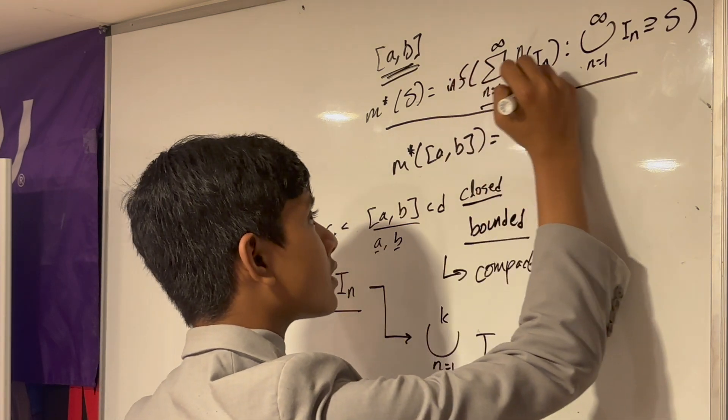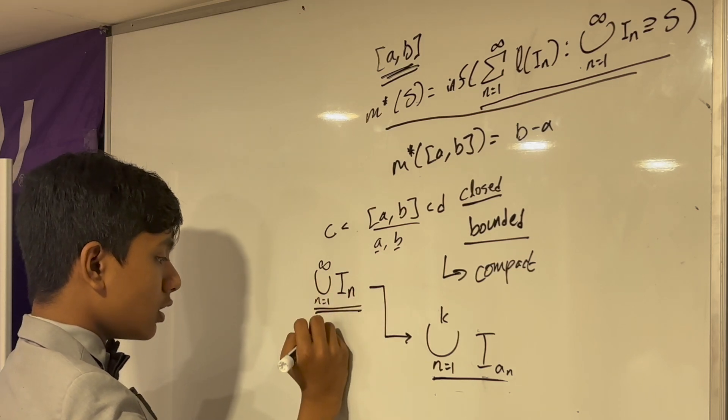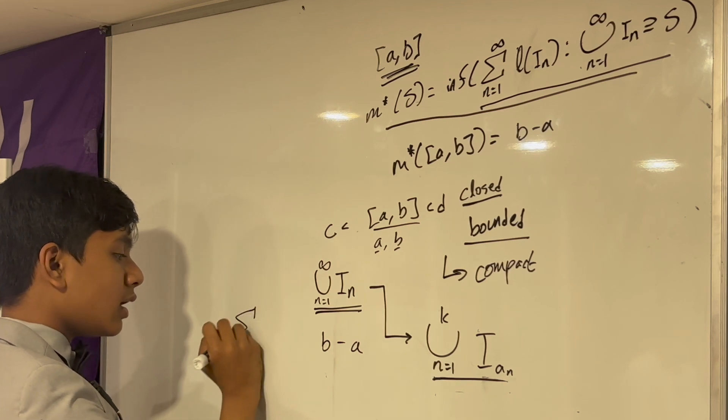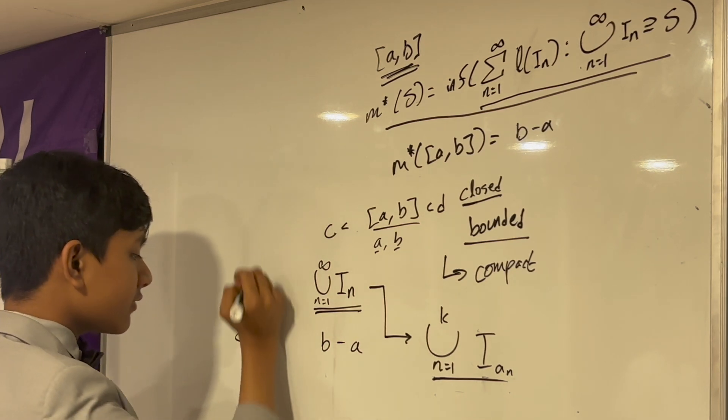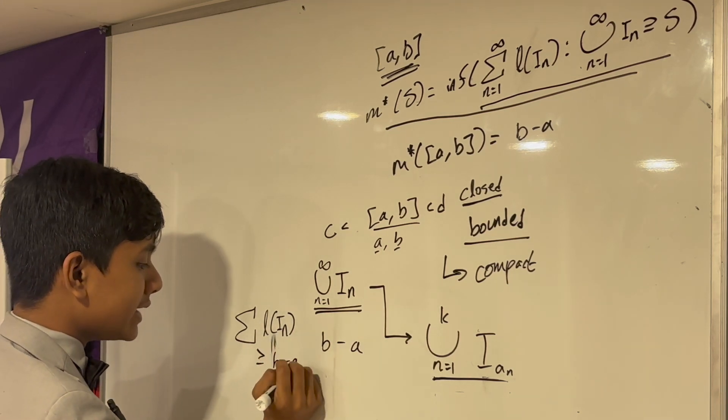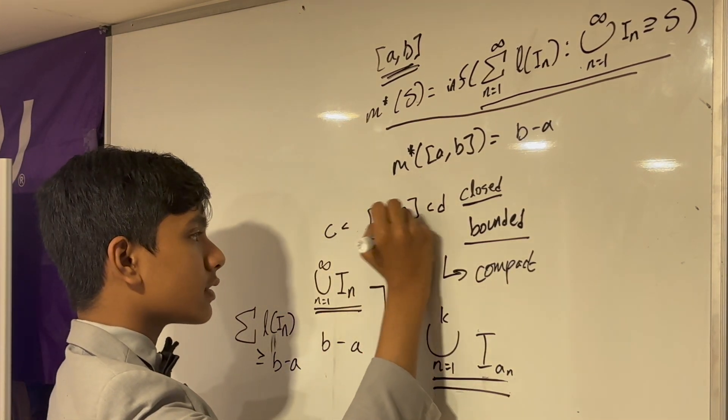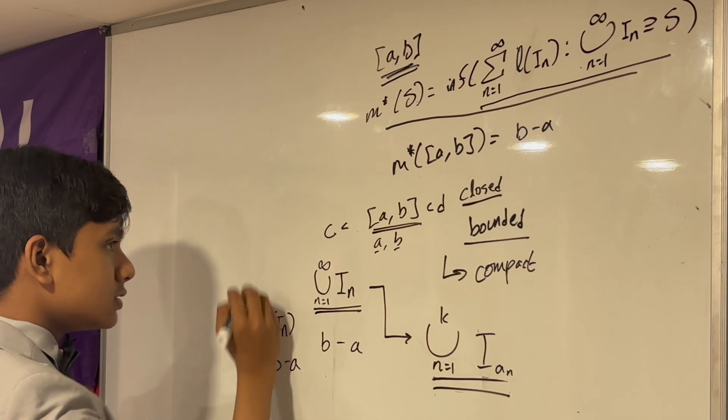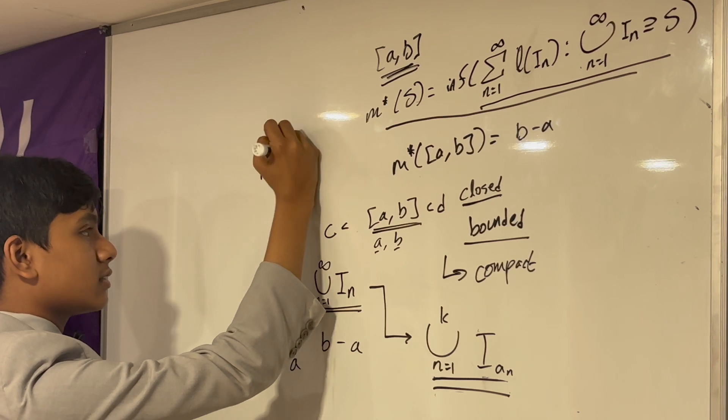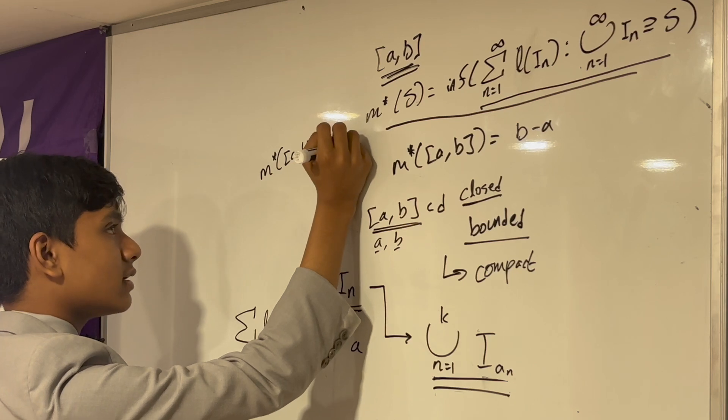Or the sum of its length has to be greater than or equal to B minus A. Otherwise, of course, it couldn't cover A to B. So, that means that the Lebesgue measure of [A,B] has to be greater than or equal to B minus A.